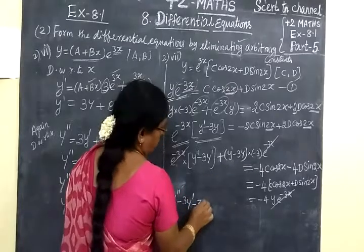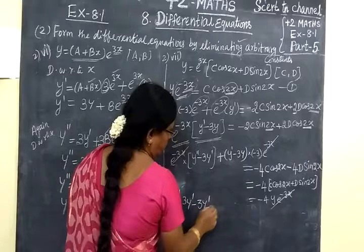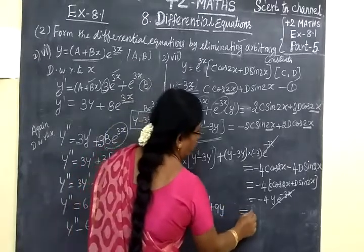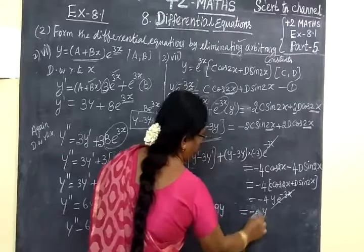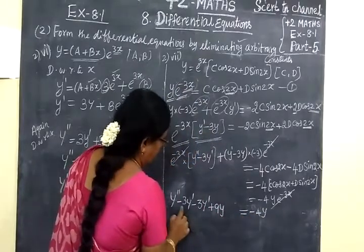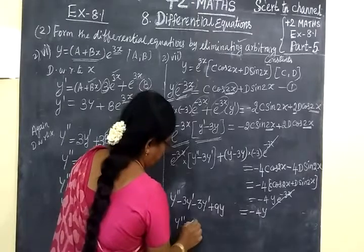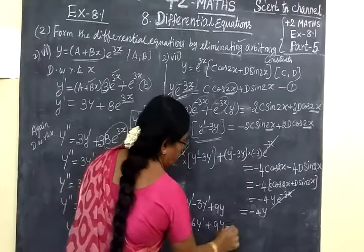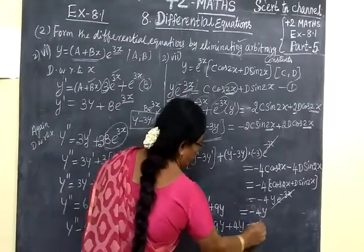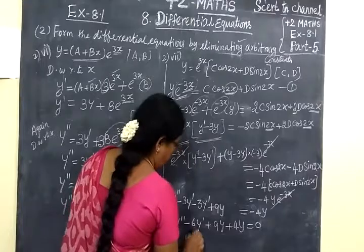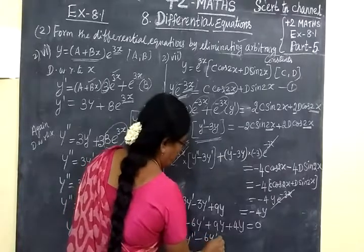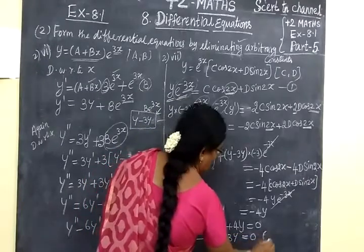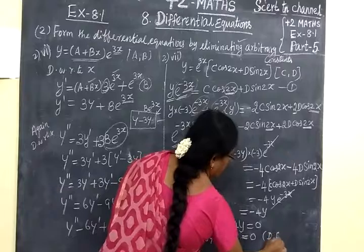So minus 3y dash minus minus plus 6, then 9y equals minus 4y. So y double-dash minus 3y dash minus 3y dash equals 6y dash, plus 9y, plus plus 6, 4y equals 0. So y double-dash minus 6y dash plus 13y equals 0 is the differential equation.